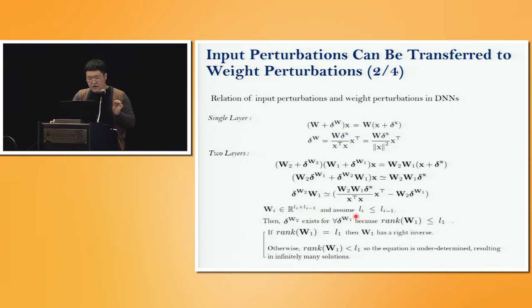If we assume this very reasonable constraint, which is a higher layer has smaller number of nodes, or equal to, compared to lower layers.